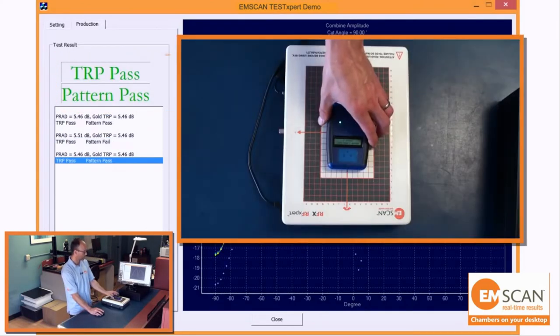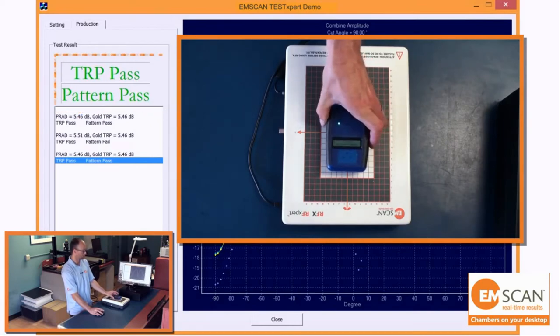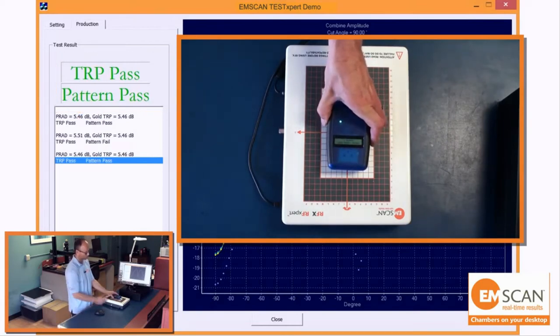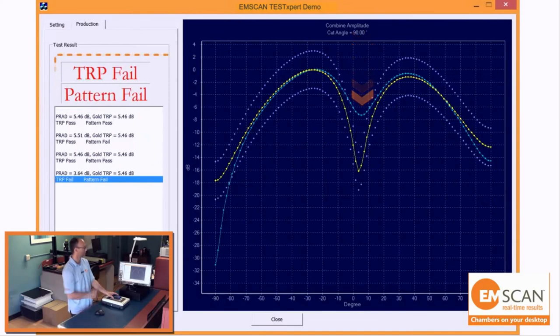If we have something where maybe there's an interfering structure in your system, I'll just put my fingers there. You can see both in this case TRP and pattern fail.